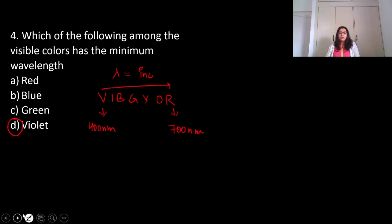Which of the following among the visible colors has the minimum wavelength? Minimum wavelength: we start from 400 nanometers and go to 700 nanometers. The least wavelength is 400 nanometers, and maximum wavelength is 700 nanometers. The answer is D.